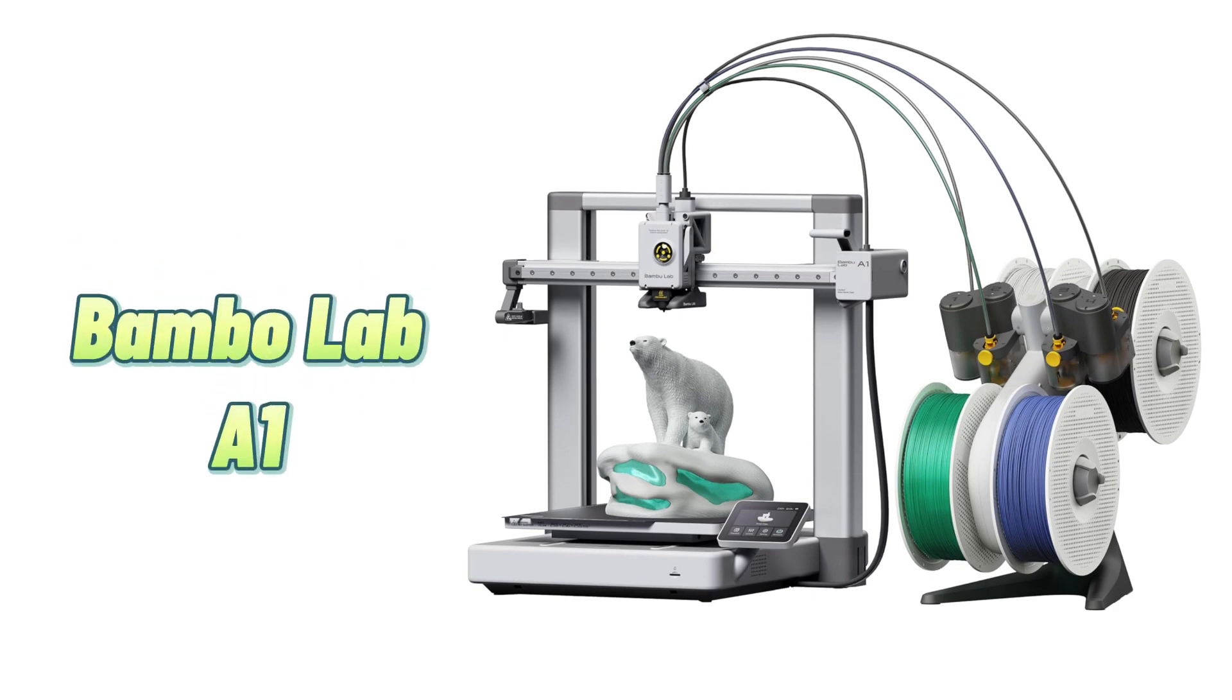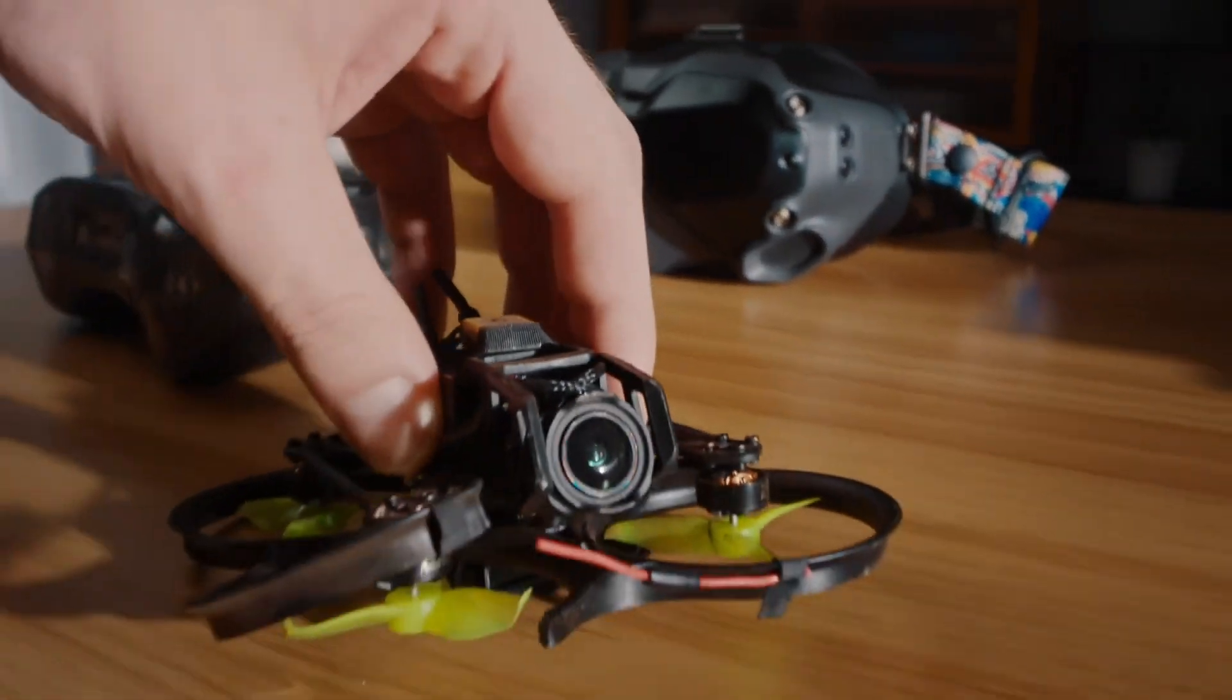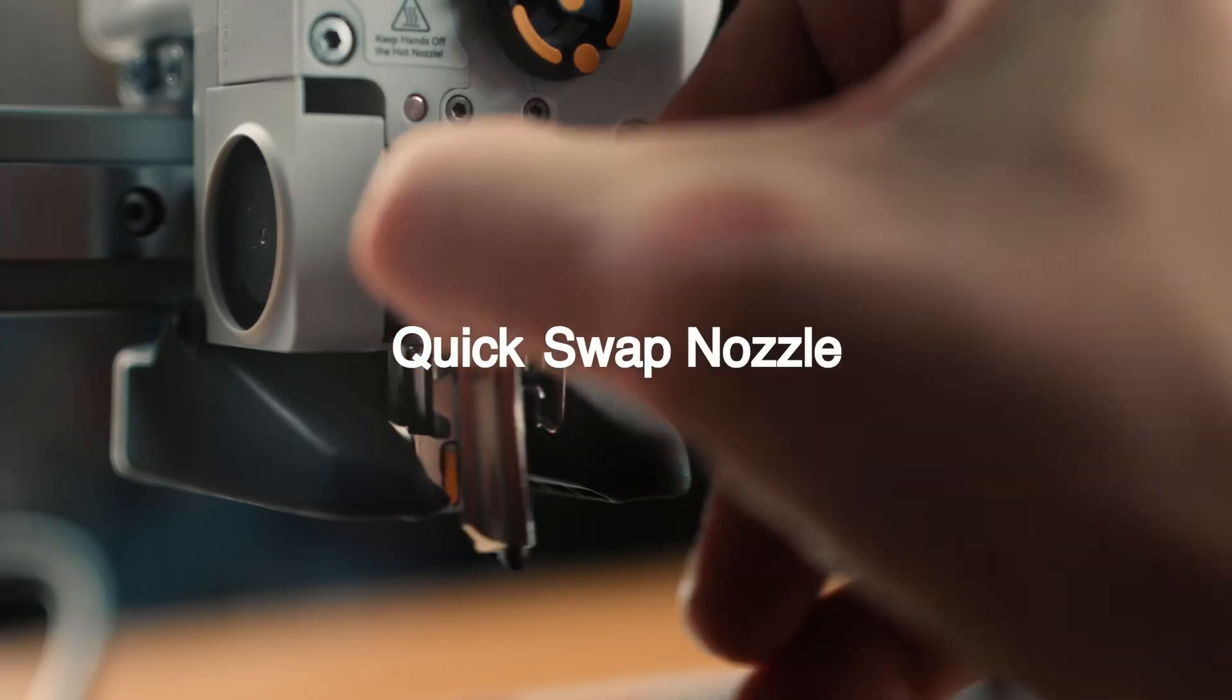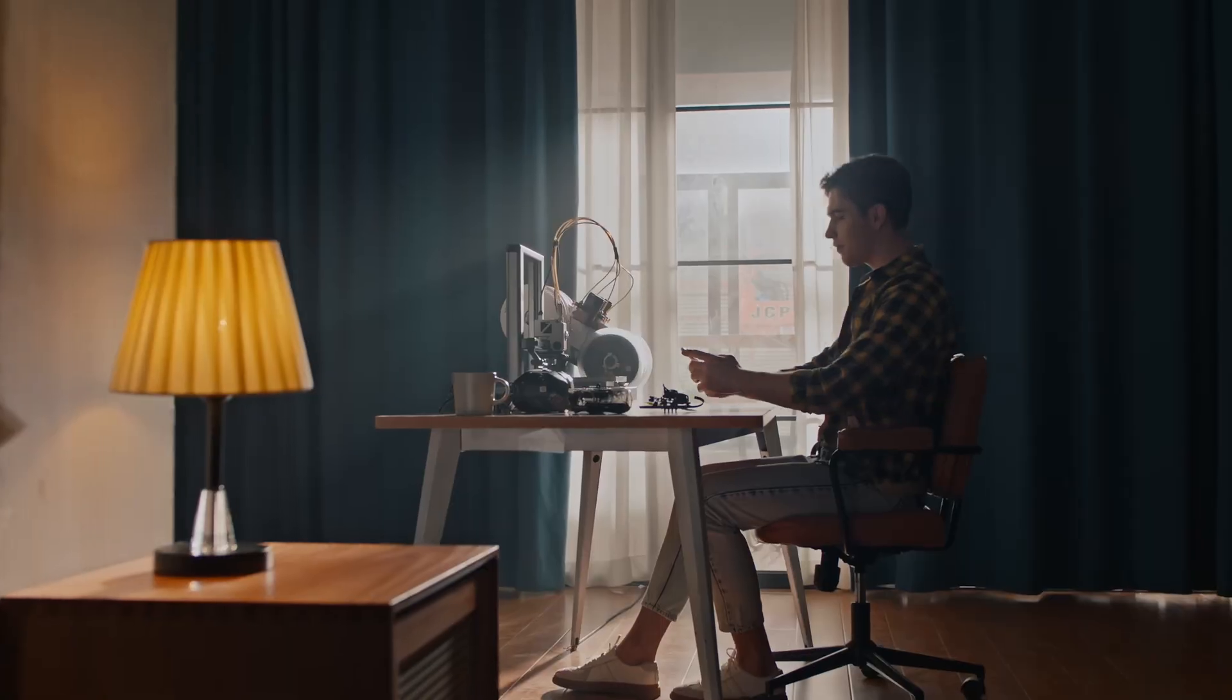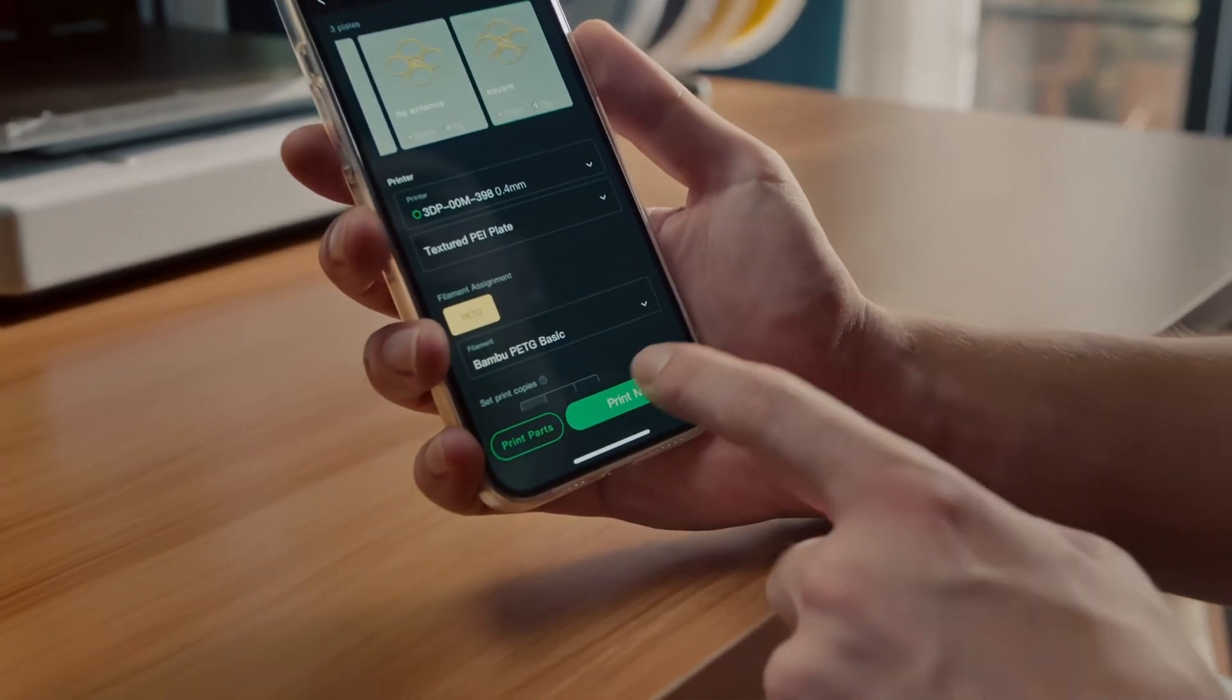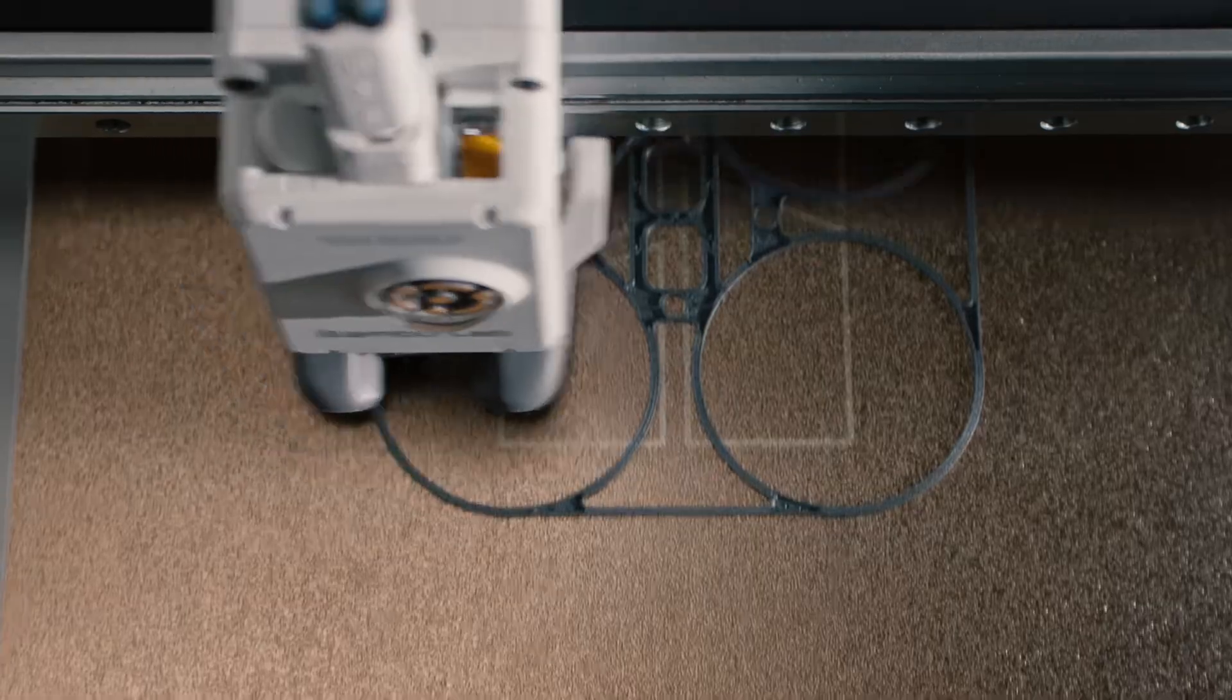Number 3, Bamboo Lab A1 3D Printer delivers a perfect balance of high-speed performance and exceptional precision, transforming your 3D printing experience. With a remarkable acceleration of 10,000mm/s², this printer achieves rapid printing while maintaining unparalleled accuracy, ensuring detailed and flawless prints every time.